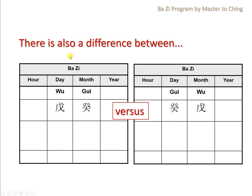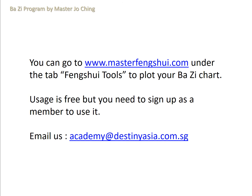There is also a difference between if you are a WU Day Master trying to combine with a GUI Water, or you are a GUI Water trying to combine with WU. There's a bit of difference in terms of the person's personality. I'll leave this discussion for class. I hope you have learned something today in terms of the heavenly stems arrangement.